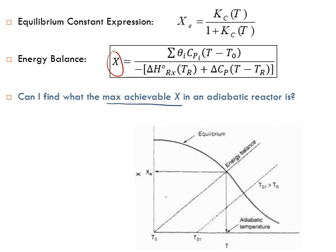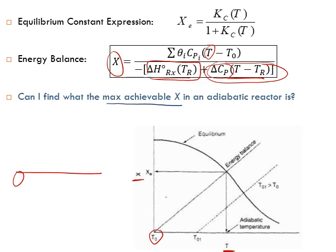Let's plot X versus T. For the X obtained from the energy balance, the term delta-Cp is very small compared to the main term, so the energy balance becomes approximately linear — a straight-line relationship between X and T. At the beginning of the reactor, T equals T-naught, and as we go down the length of the reactor the reaction progresses and X increases.